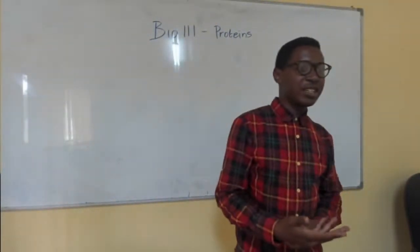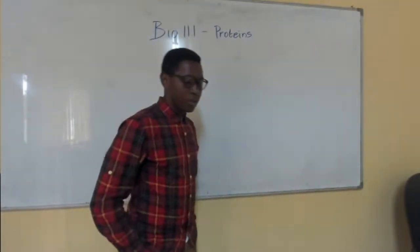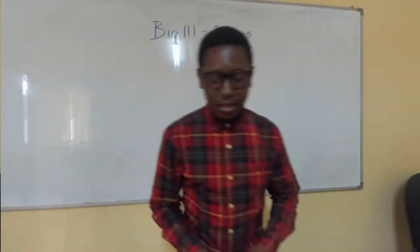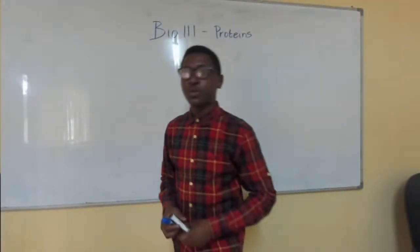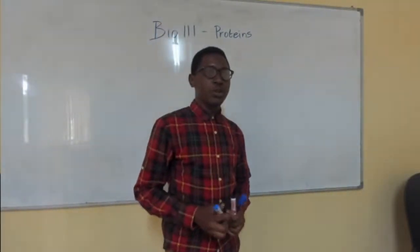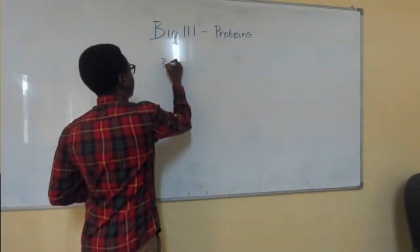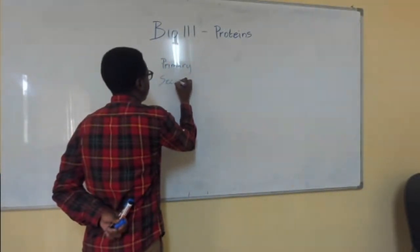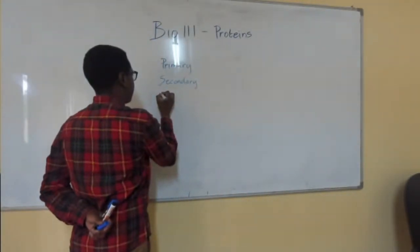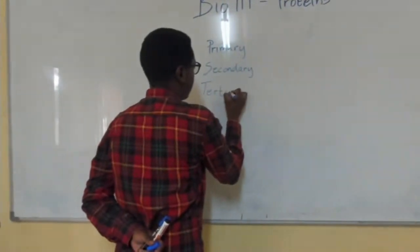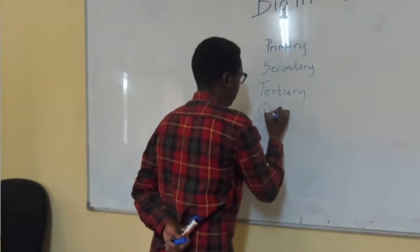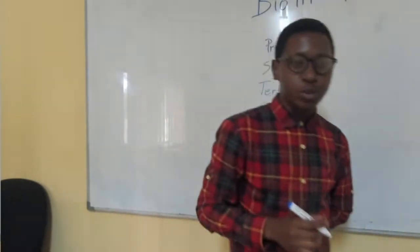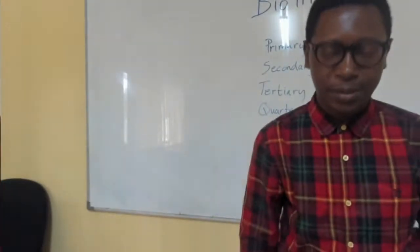Question four was looking at the different levels of structure of proteins. We know that there are four levels of organizational structure of proteins: we have the primary structure, then the secondary, then the tertiary, and finally the quaternary.